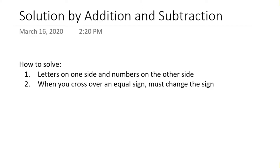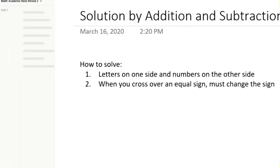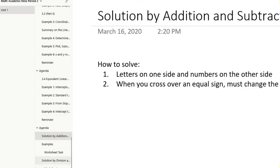In here you're going to learn how to solve for letters by putting them on one side and putting numbers on the other side. For step two, when you cross over an equal sign you must change the sign of that specific variable or number. Knowing these two key points is essential in addition and subtraction of various solutions. We're going to look at various examples on how to approach equations like that.